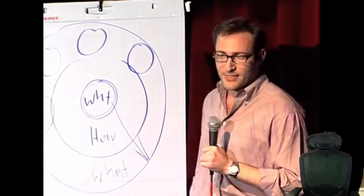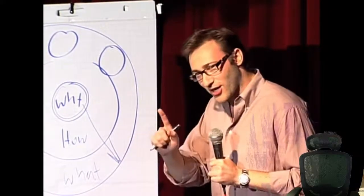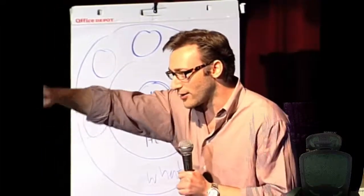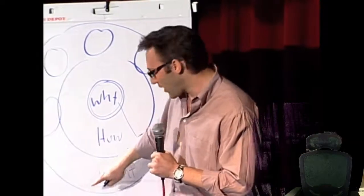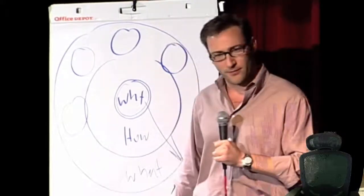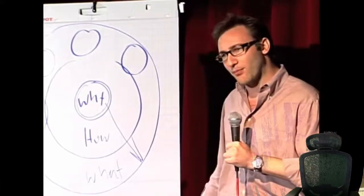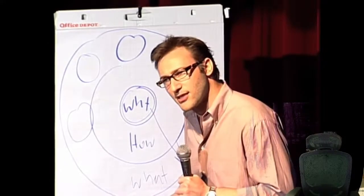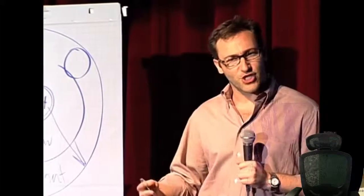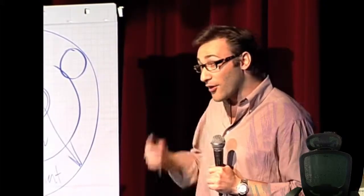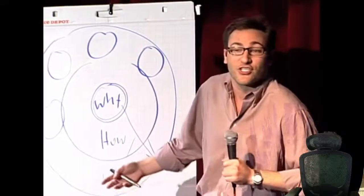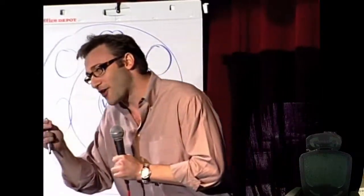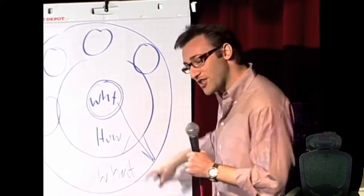None of this is opinion — it's grounded in biology. The human brain has three major components that correlate with the golden circle. The neocortex corresponds to the 'what' level and handles rational, analytical thought and language. The middle two sections form the limbic brain, responsible for feelings like trust and loyalty, all human behavior, and decision-making — but it has no capacity for language. So when we communicate from the outside in, people understand the facts but it doesn't drive behavior.